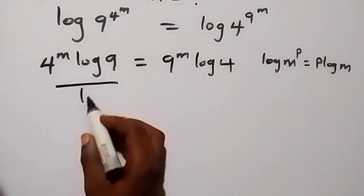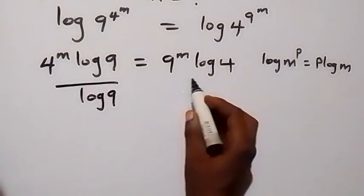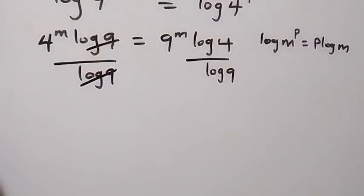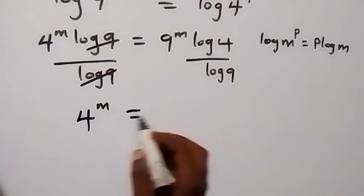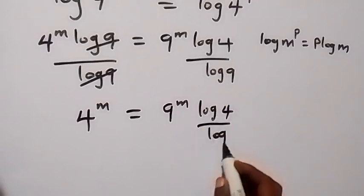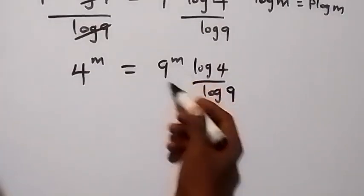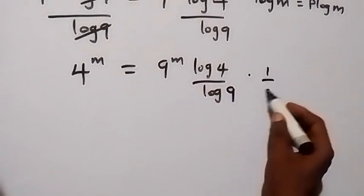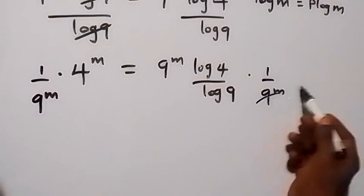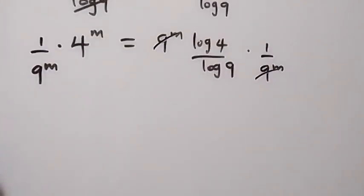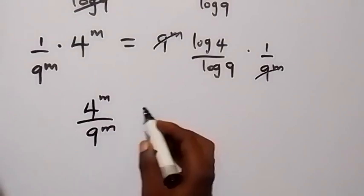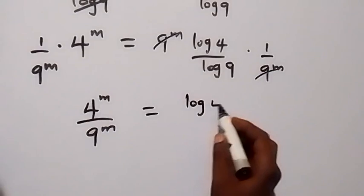In the next step, let's divide both sides by log 9 to remove log 9 here. Divide this side by log 9 and also divide this side by log 9. Log 9 cancels out here. Then we multiply by 1 over 9 raised to power n on both sides. 9 raised to power n cancels, and what we have can be written as 4 raised to power n over 9 raised to power n, which is the same as log 4 over log 9.